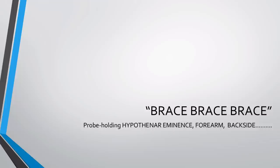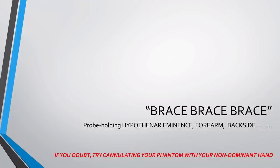Let's steal a phrase from the airline industry: brace, brace, brace. Perhaps at the top of your game at the beginning of your shift you can thread a needle standing on one leg, but by the end of the shift it's best to do the best you can for the patient. I like to make sure my hypothenar eminence is braced on the patient so I can feel if there's any continental drift happening, my forearm is braced on the bed, and my backside is firmly planted in a chair or stool. At the end of a 10-hour shift I'm pretty wobbly. If you think you can cannulate without this bracing, try it with your non-dominant hand and see just how good you are.